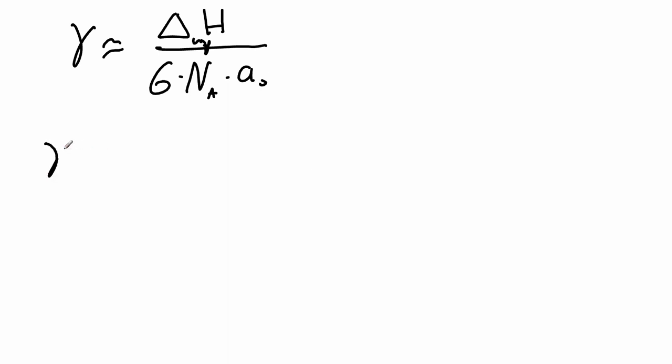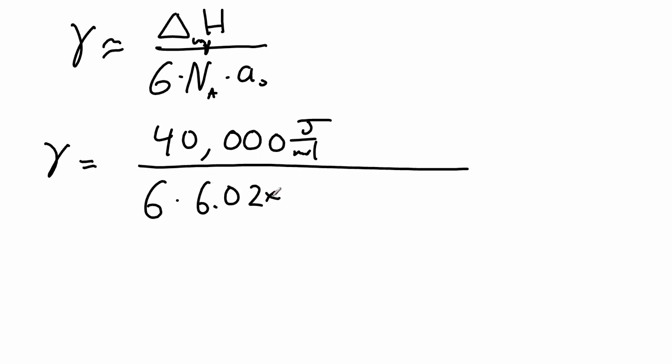We've got our heat of vaporization, which gives us the overall binding energy of our mole of water. So we'll convert that to joules per mole. We are going to divide by six because we're only cutting off one face of the cube, not all six. We divide by Avogadro's number, 6.02 times 10 to the 23rd reciprocal moles, because we want to go from binding energy per mole to binding energy per molecule.